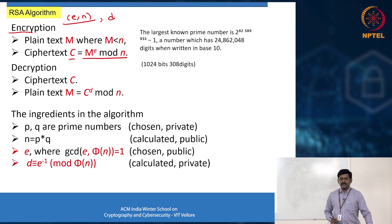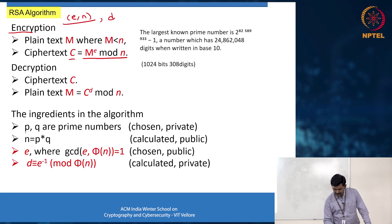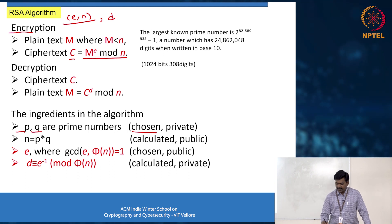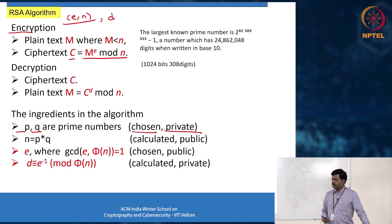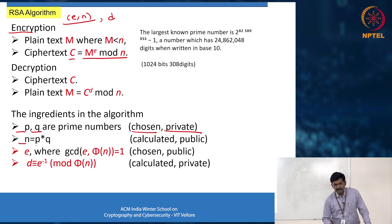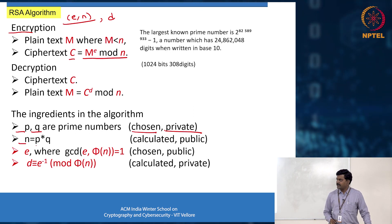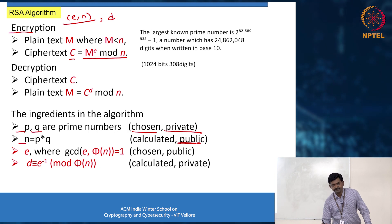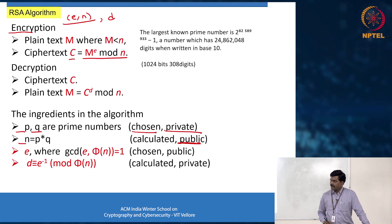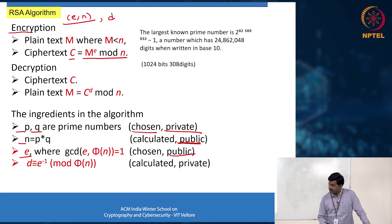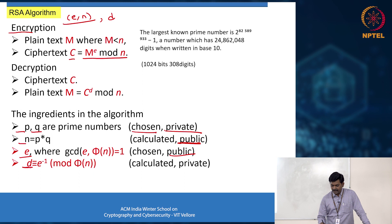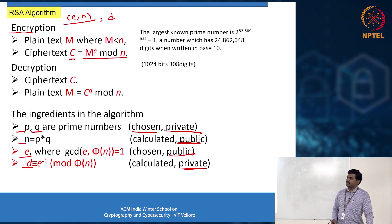Looking at the ingredients: P and Q are the prime numbers chosen by the individual and kept private. N = P × Q is calculated and made public. E is chosen relatively prime to φ(N) and made public. D, the multiplicative inverse of E, is kept private. Public key is (N, E), private key is D. Quantum computers have the ability to crack the integer factorization problem, which would break RSA.